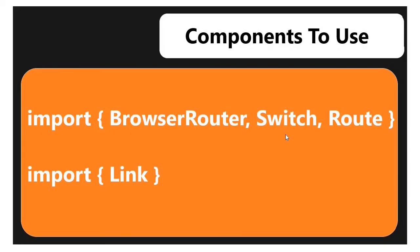The key components we need are: BrowserRouter, Switch, and Route. Routing means we configure specific URL paths — like slash about, slash dashboard, slash videos — and map each URL to a component. For example, if you click the about button, it hits slash about and redirects. If you click the dashboard button, it hits slash dashboard and redirects. The Link component is used to handle these navigations.